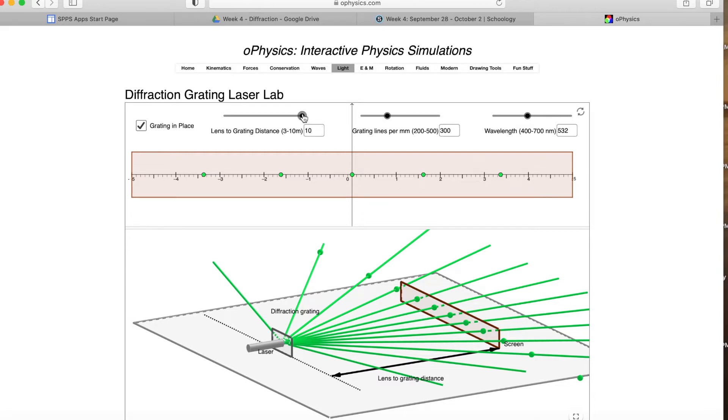You'll have the slide bar, you can change the distance between the grating and the screen, and you can see that the maxima are getting closer as you move that closer.